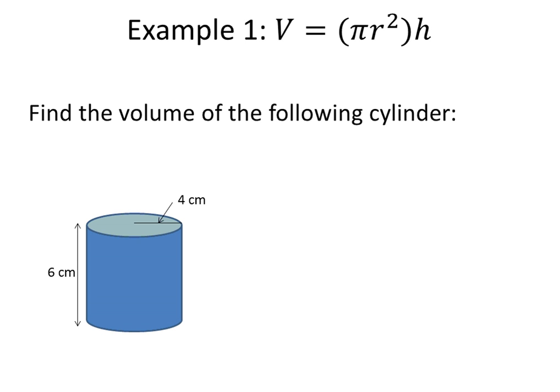Find the volume of the following cylinder. So volume equals pi r squared times h. To solve this for volume, you will substitute in the radius and the height. The radius will be 4 and the height will be 6. So volume equals pi 4 squared times 6. And substituting into your calculator and rounding to the tenth place, you get 301.6 centimeters cubed.